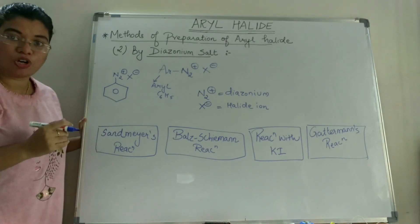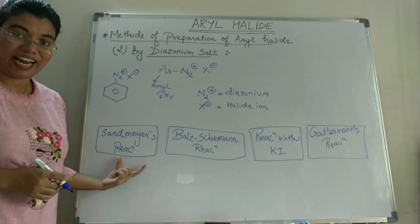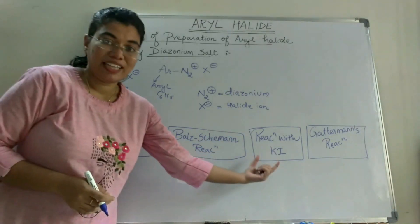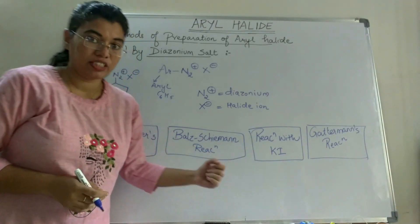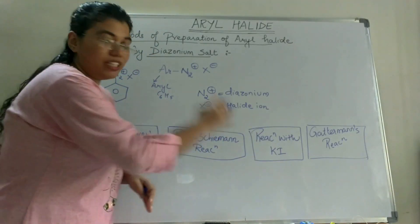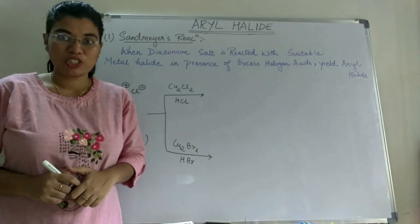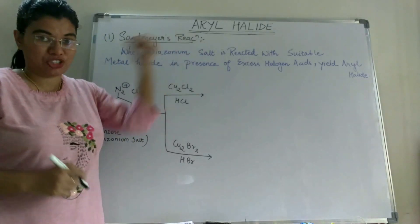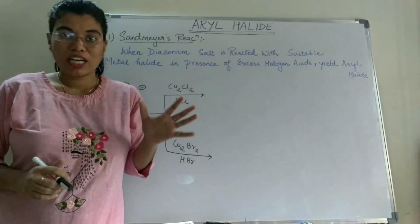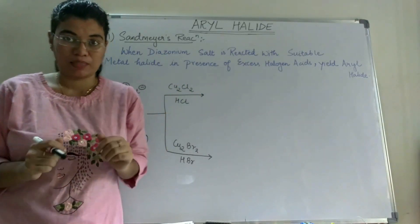Now in the diazonium salt method there are four sub-methods. The first one is Sandmeyer's reaction. The second is the Balz-Schiemann reaction. The third is the reaction with KI, where KI is potassium iodide. And the fourth is Gatterman's reaction. Let's study each one of these reactions, starting with Sandmeyer's reaction. In Sandmeyer's reaction, a diazonium salt is reacted with a metal halide and halogen acid.